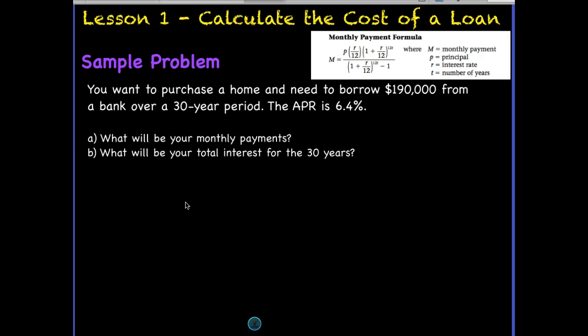Here we have a sample problem. You want to buy a home and need to borrow $190,000 from a bank over a 30-year period. The interest rate they're offering is 6.4%. Typically when you buy a home, say the home is on the market for $200,000, you'll have to put down about 5% to purchase it. So in this case, this is the amount you're borrowing, not necessarily the price of the home. Our two questions are: what will be our monthly payment, and how much interest will we pay over 30 years if we make our payments as scheduled?